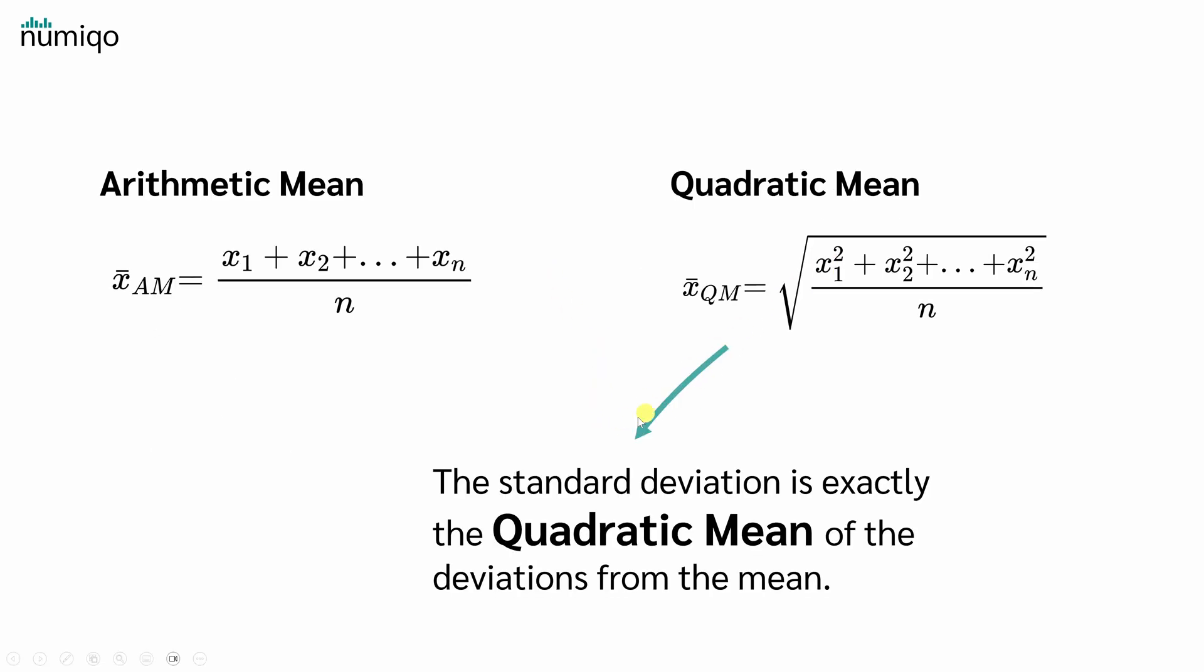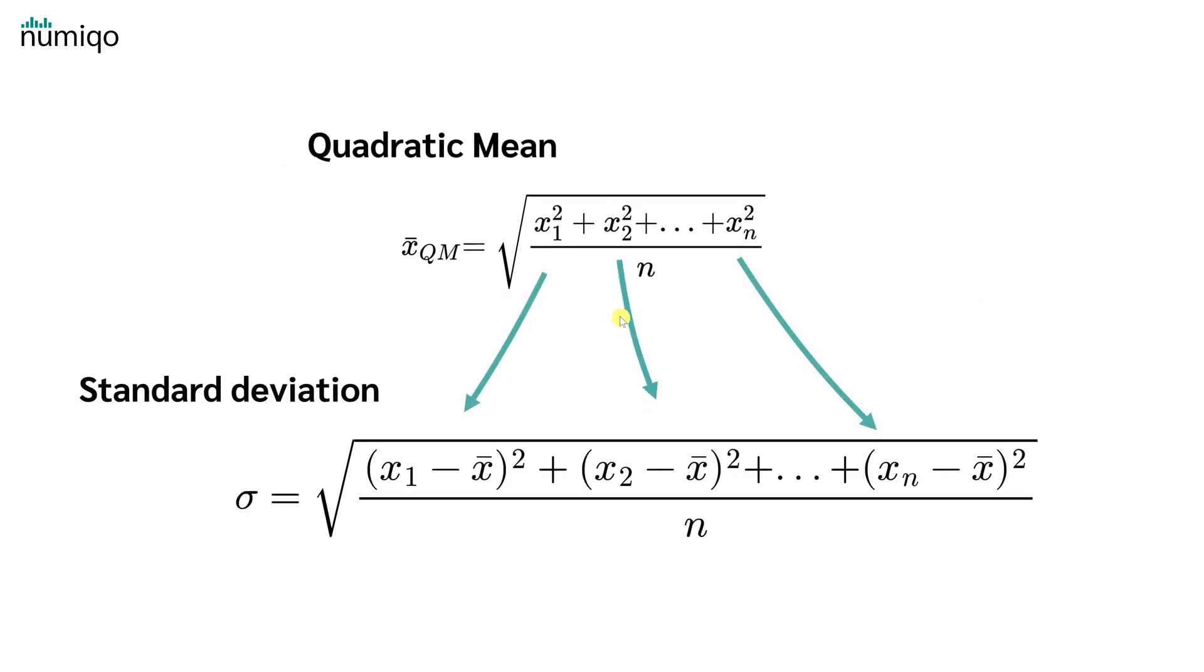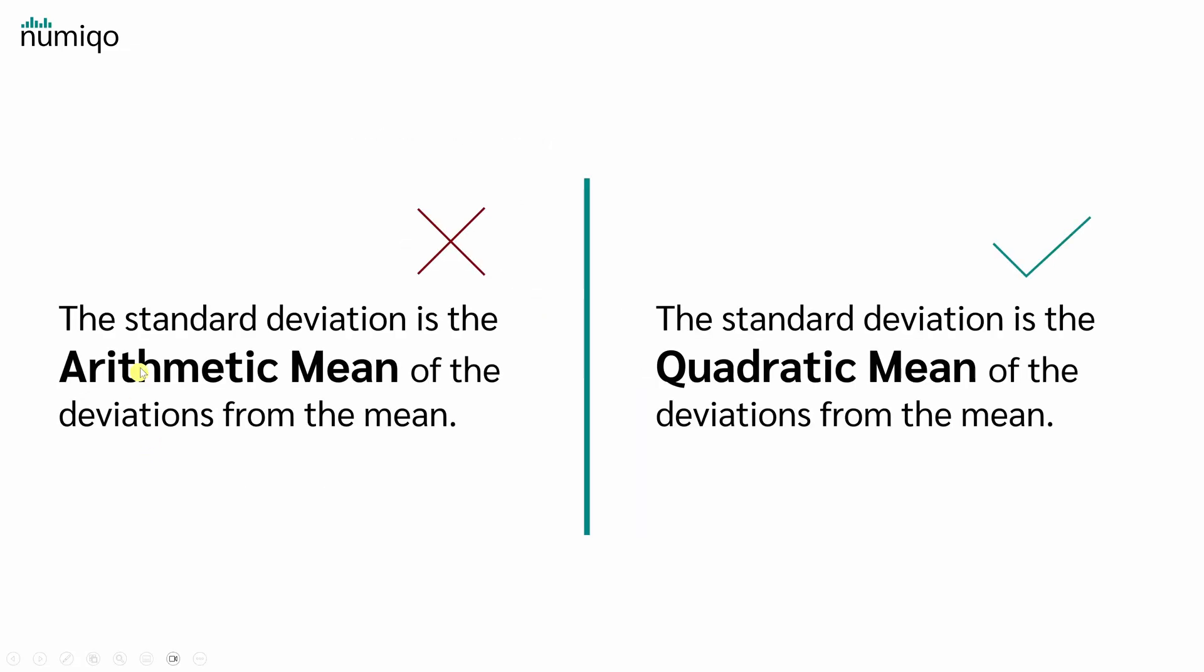And the standard deviation is exactly the quadratic mean of the deviations from the mean. So if we insert for x the deviations from the mean, we have exactly the standard deviation formula. More precisely, the population standard deviation. Therefore, the statement that the standard deviation is the arithmetic mean of the deviations from the mean is wrong. But the statement that the standard deviation is the quadratic mean of the deviations from the mean is true.